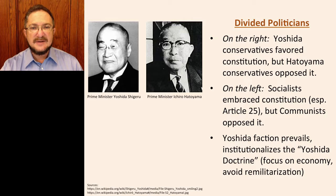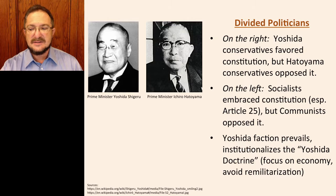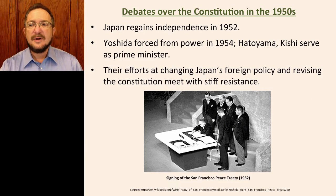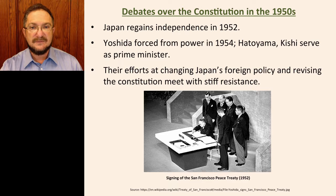Ultimately, Prime Minister Yoshida's approach prevailed and came to be institutionalized in something known as the Yoshida doctrine: avoid remilitarization, focus on the economy. This became one factor behind Japan's rapid rise to become the world's number two economy by the late 1970s. However, although Yoshida prevailed, there were contentious debates, contested elections, and even some efforts at constitutional reform in the 1950s.